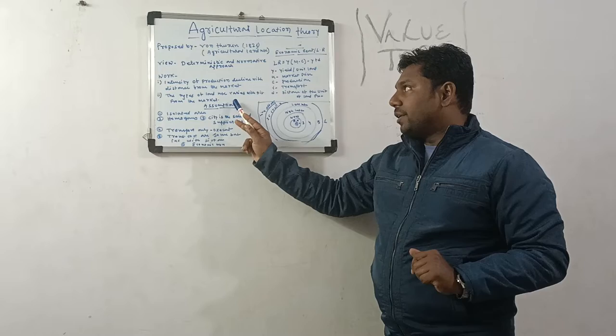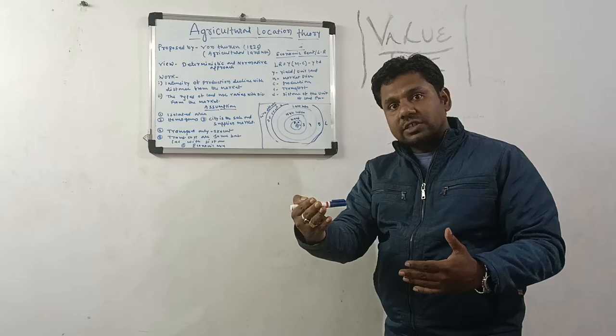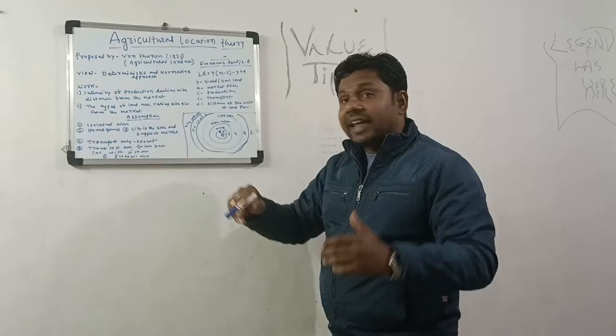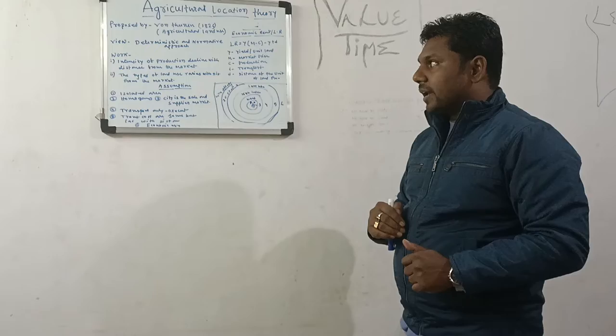Number two: the types of land use. There are two types of land use. The land use varies with the distance from the market — the market area will have more intensive land use than areas further away.